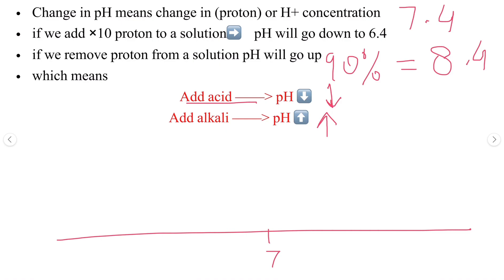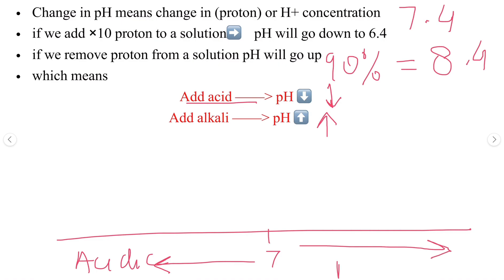If we represent it through a scale at 7 or 7.4: if we add acid to the solution, the pH will go down to the acidic side, and if we add alkali or base, the pH will go up to the basic side. It's a very simple logic — adding acid lowers pH, adding alkali raises pH.